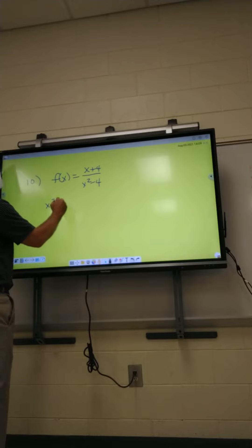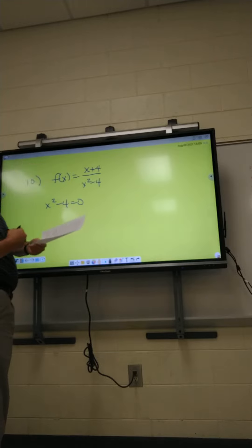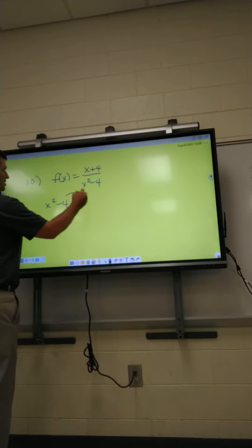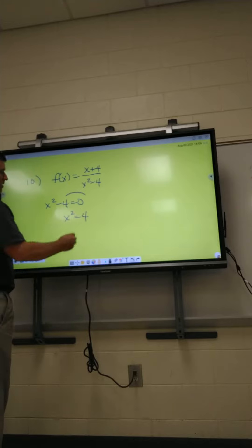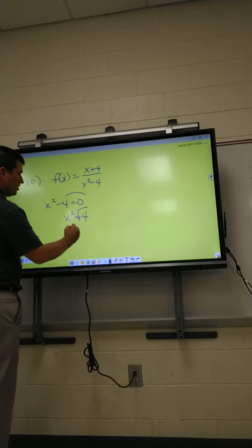Take the bottom, set it equal to zero. This one's different because they both don't have an x in common the way they did on number eight. So we'll just take minus four, move it over - that'll give you positive four. You find the square root, you get two. Since you found a square root, it'd be plus or minus two, positive two and negative two.